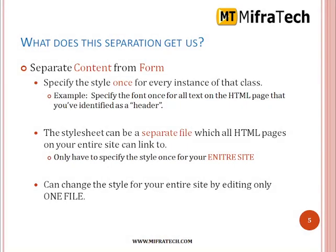What does this separation get us? Separate content from form — specify the style once for every instance of content of that class. For example, specify the font once for all text of the HTML page identified as a header: set the color code, font face, height, and width. The style sheet can be a separate file which all HTML pages on your entire site can be linked to. You can change the style for your entire site by editing only one file.